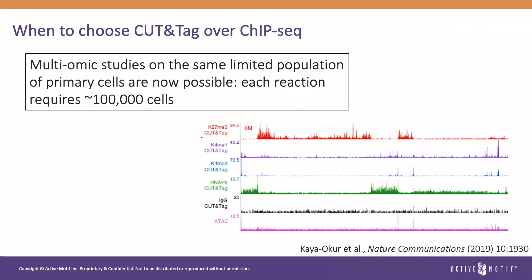When do we choose Cut-and-Tag over CHIP-seq? Cut-and-Tag requires only 100,000 cells per reaction, which is 10 or more times less than what's required for CHIP. In this example, the same sample can be used to measure three different histone marks, RNA-POL2, and ATAC-seq, all using less than 1 million cells. This makes multi-omic studies with limited primary cells more feasible.